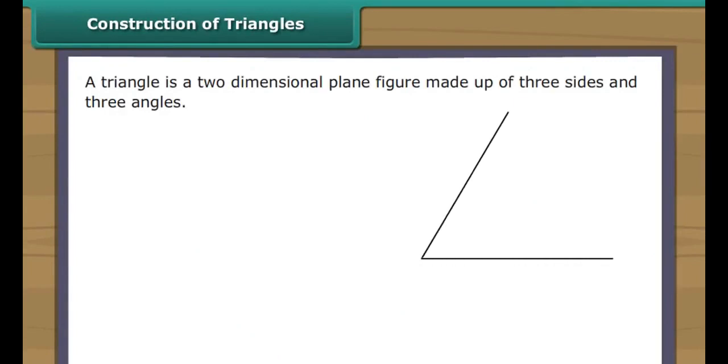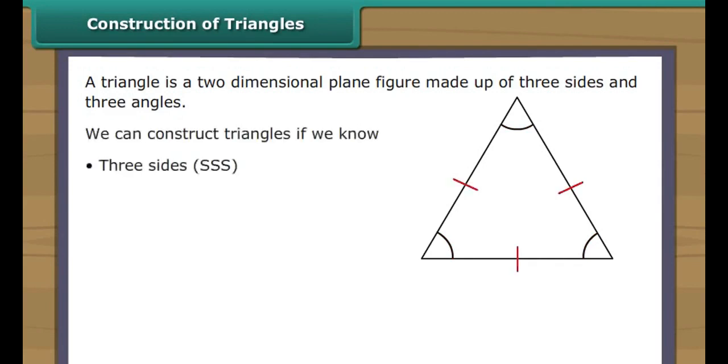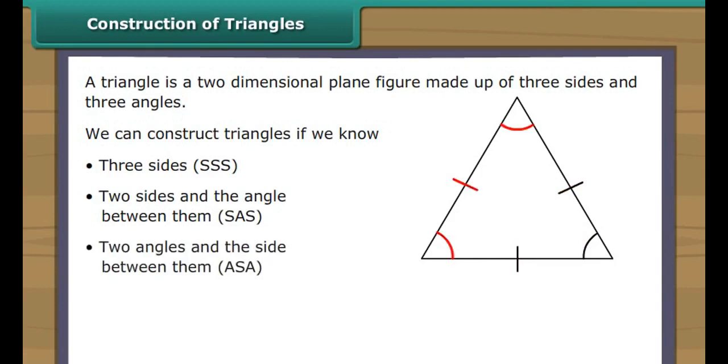Construction of Triangles. A triangle is a two-dimensional plane figure made up of three sides and three angles. We can construct triangles if we know three sides (SSS), two sides and the angle between them (SAS), two angles and the side between them (ASA), or right angle, hypotenuse and one side (RHS). Let us learn to construct all four types of triangles.